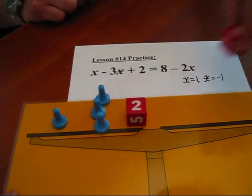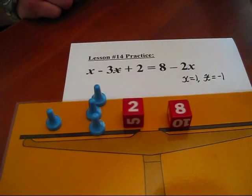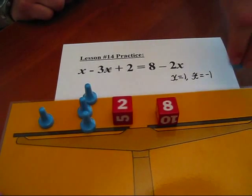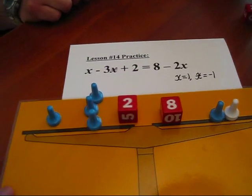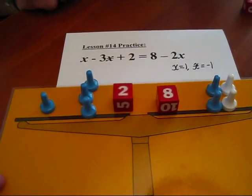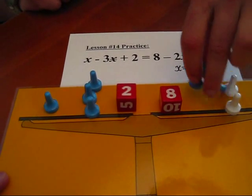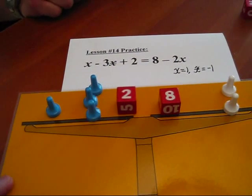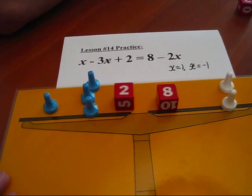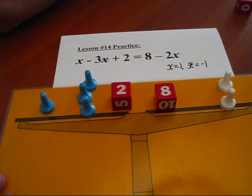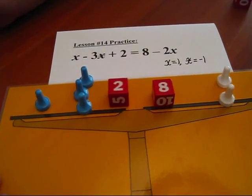Yes, and on the other side. 8 take away 2 x. Okay, so you've now taken away 2 x's, so now you have the original physical setup. Would you please check to see if x equals 1 and star equals negative 1 works? Would you check that, please?